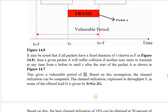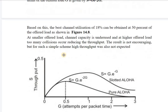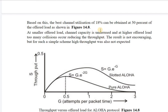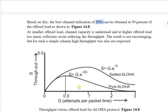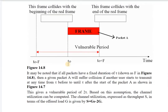Based on this assumption, channel utilization can be computed using the throughput formula S. The best channel utilization achievable in pure Aloha is 18%, obtained at 50% of the offered load, as shown in figure 14.8.